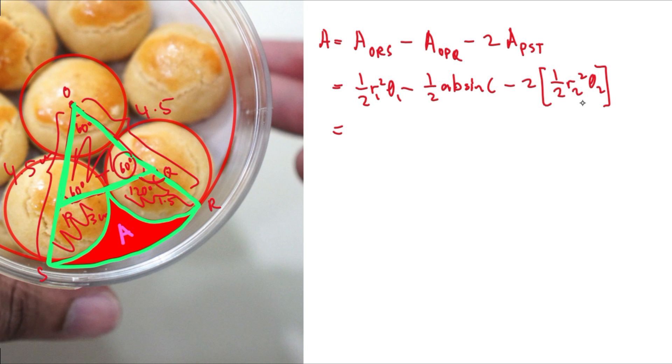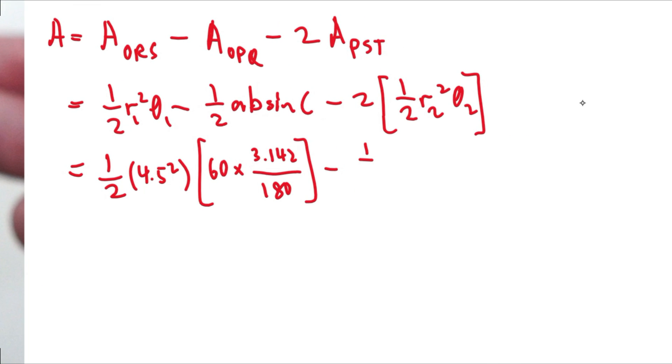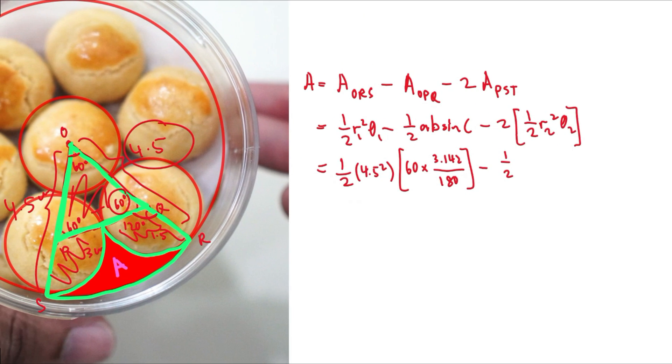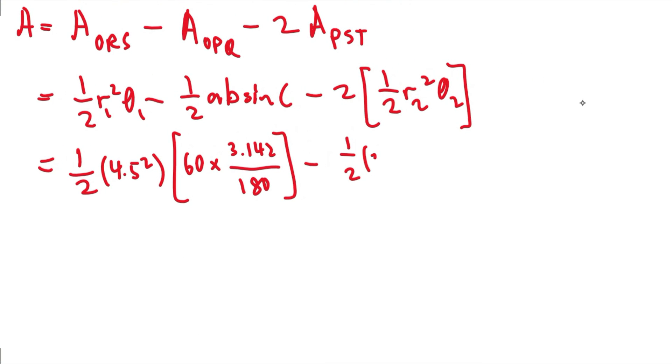All right. So now it's all about substitution. So for the area of large sector, we have 1 over 2. This large sector, the radius is 4.5. So 4.5 square. Once again, theta has to be converted because we're using 1 over 2 R square theta. And this angle is still 60 degrees. So this will be 60 times 3.142. Once again, this is the value of pi over 180 minus 1 over 2 AB sine of C. So again, the sides, these sides are three centimeters. So exactly as we did earlier, 3, 3 sine of 60 degrees.